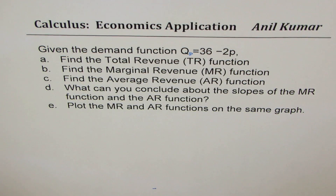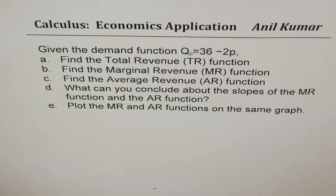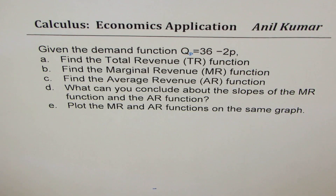I'm Anil Kumar, sharing with you the solution of a question from my subscriber, and I hope it is going to help many others. The question is: given the demand function q equals 36 minus 2p, find the total revenue (TR) function, find the marginal revenue function, find the average revenue function, and what can you conclude about the slopes of MR and AR functions?